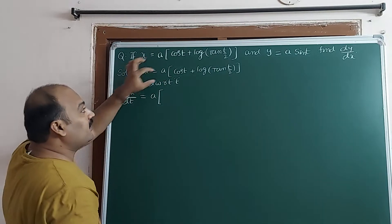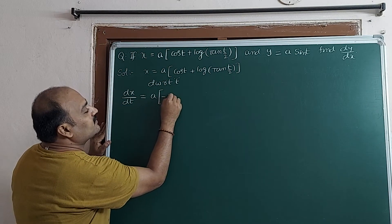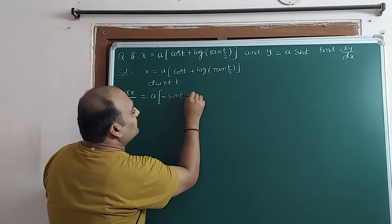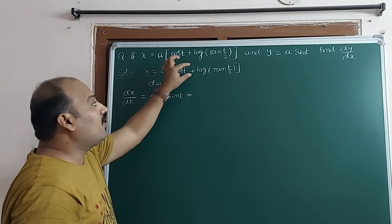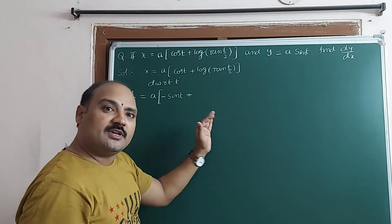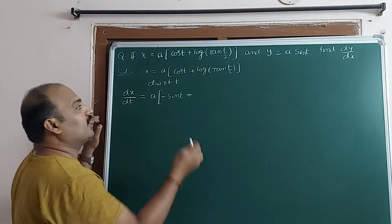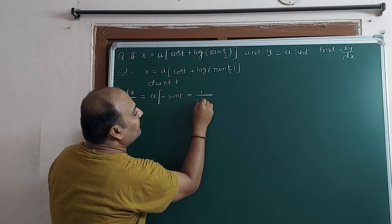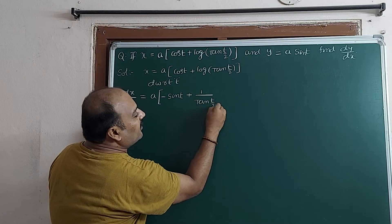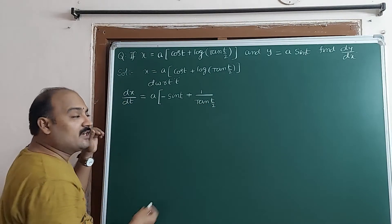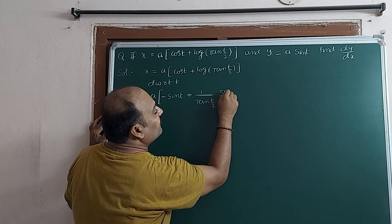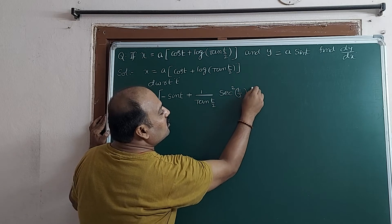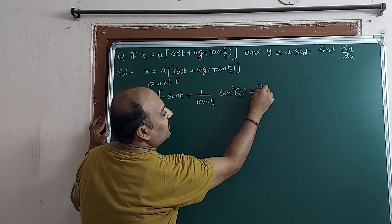Plus d/dt of log(tan t/2). Using the chain rule, d/dt of log(f(x)) = 1/f(x) times f'(x). So d/dt of log(tan t/2) = 1/(tan t/2) times the derivative of tan t/2. The derivative of tan x is sec²x, so tan(t/2) gives sec²(t/2), and then the derivative of t/2 is 1/2.